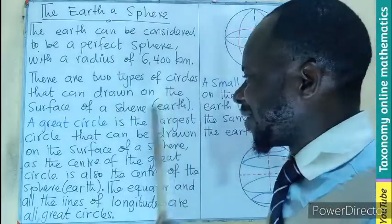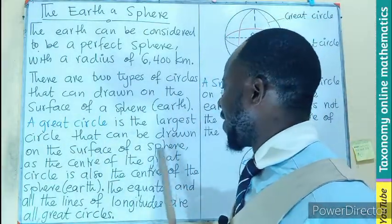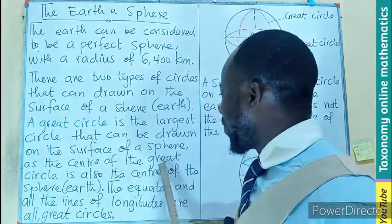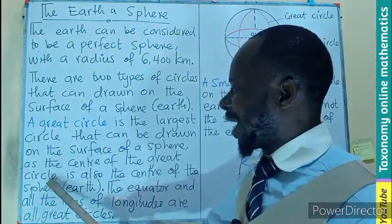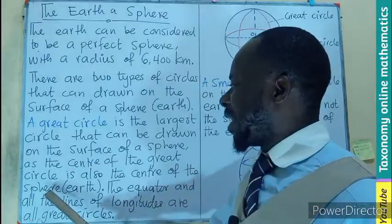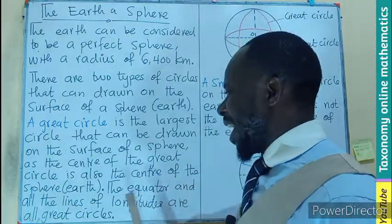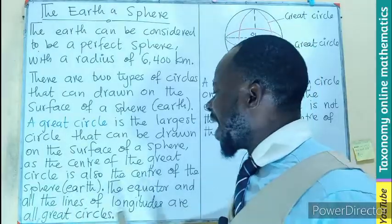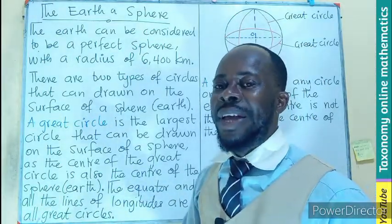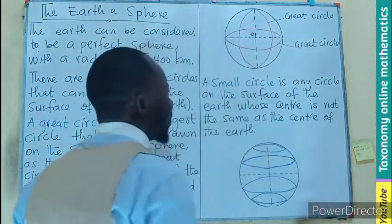A great circle is the largest circle that can be drawn on the surface of a sphere. The center of the great circle is also the center of the sphere, which in this case is the Earth. So the equator and all the lines of longitude are considered to be great circles.